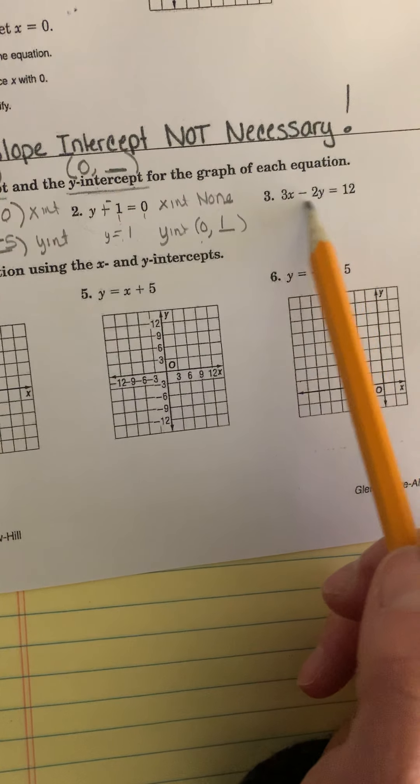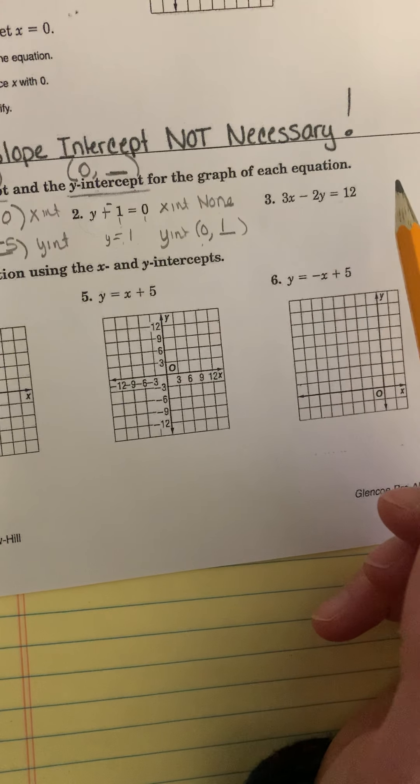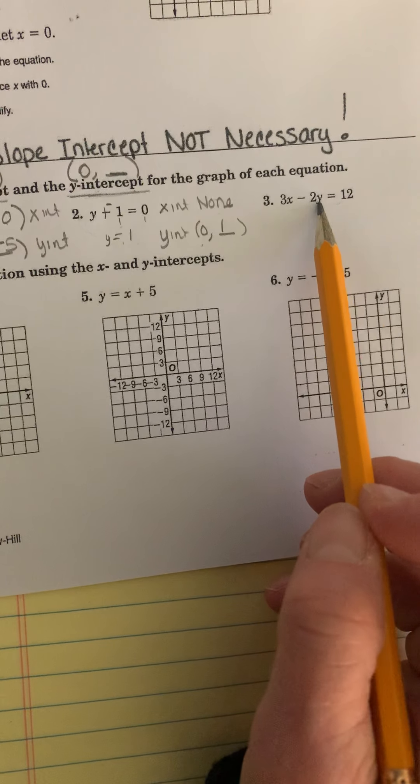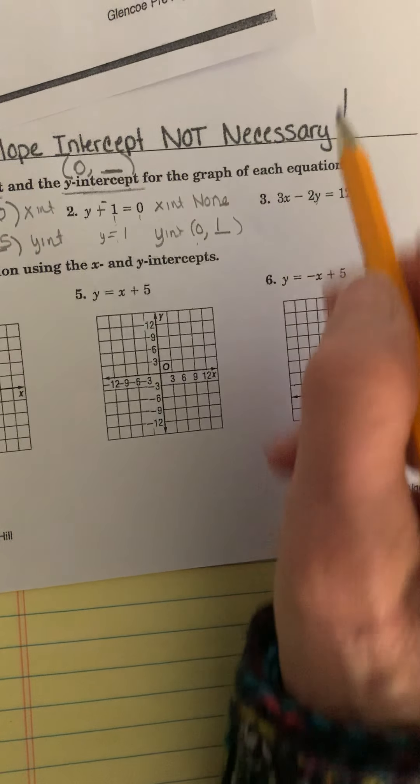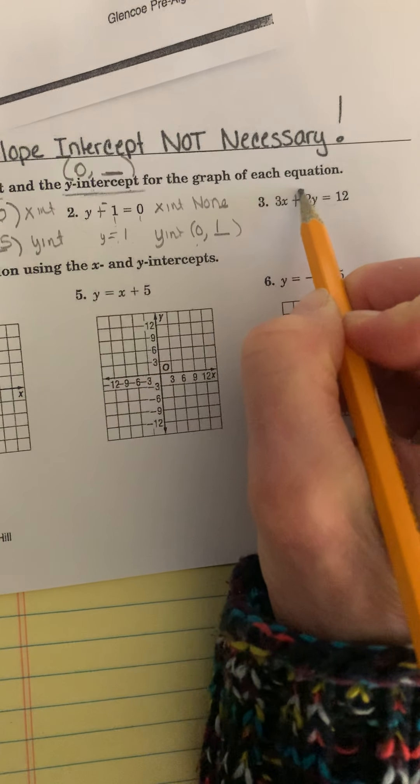Then you're going to go on to the next problem. And you'll notice this is in a slightly different form too, but that's okay. When you want the x-intercept, you make y zero. When you want the y-intercept, you make x zero. Just remember to add opposite.